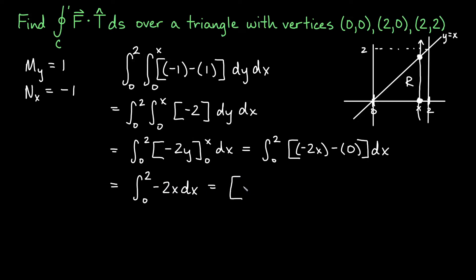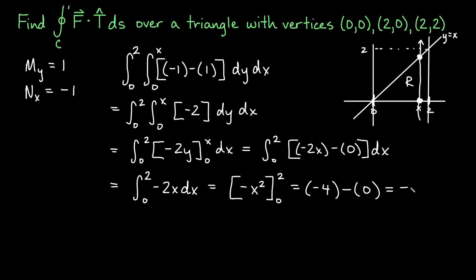The antiderivative of −2x with respect to x is −x². Evaluating from 0 to 2: plugging in 2 gives −4, minus plugging in 0 gives 0. So we get the circulation for this triangle being −4.